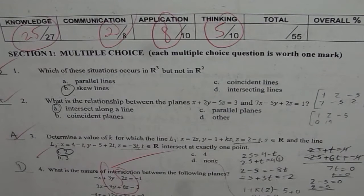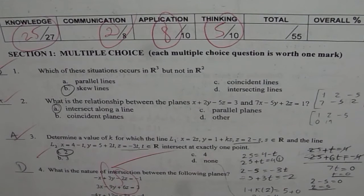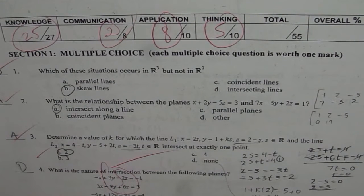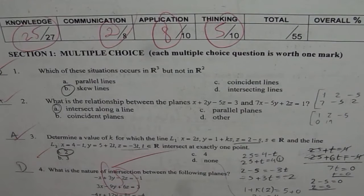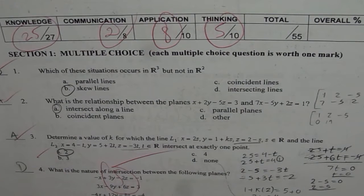Skew lines are lines in parallel planes and therefore they don't intersect. Question number two is: what is the relationship between the planes x + 2y − 5z = 3 and 7x − 5y + 2z = 1? The options are: intersecting along a line, coincident planes, parallel planes, or other.